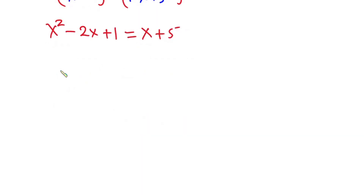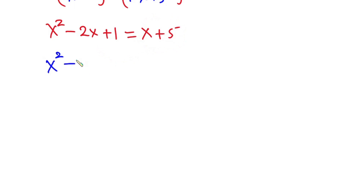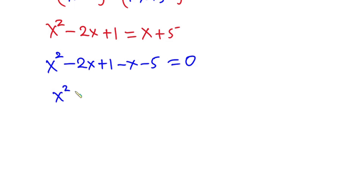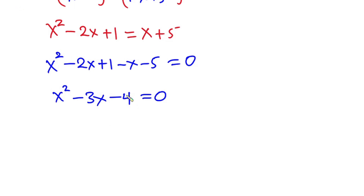Let's equate everything to 0 by moving all terms to one side: x squared minus 2x plus 1 minus x minus 5 equals 0. Simplifying: x squared, then negative 2x minus x is negative 3x, and 1 minus 5 is negative 4. So we have x squared minus 3x minus 4 equals 0. We need two numbers that multiply to negative 4 and sum to negative 3.